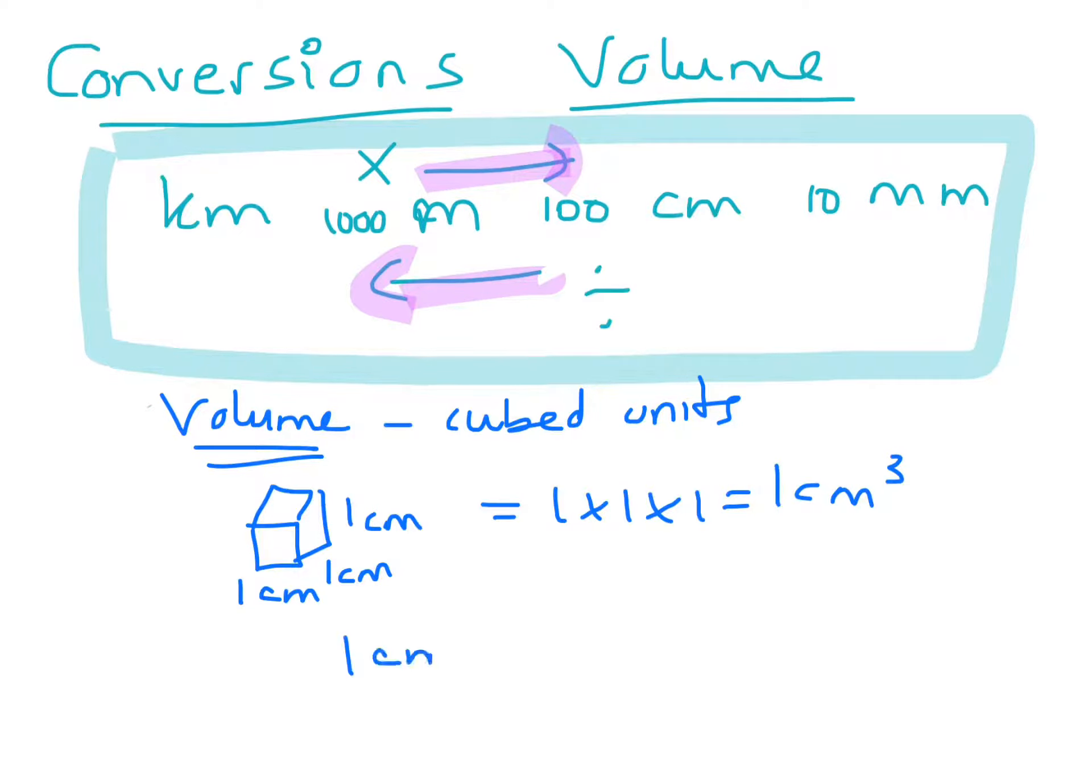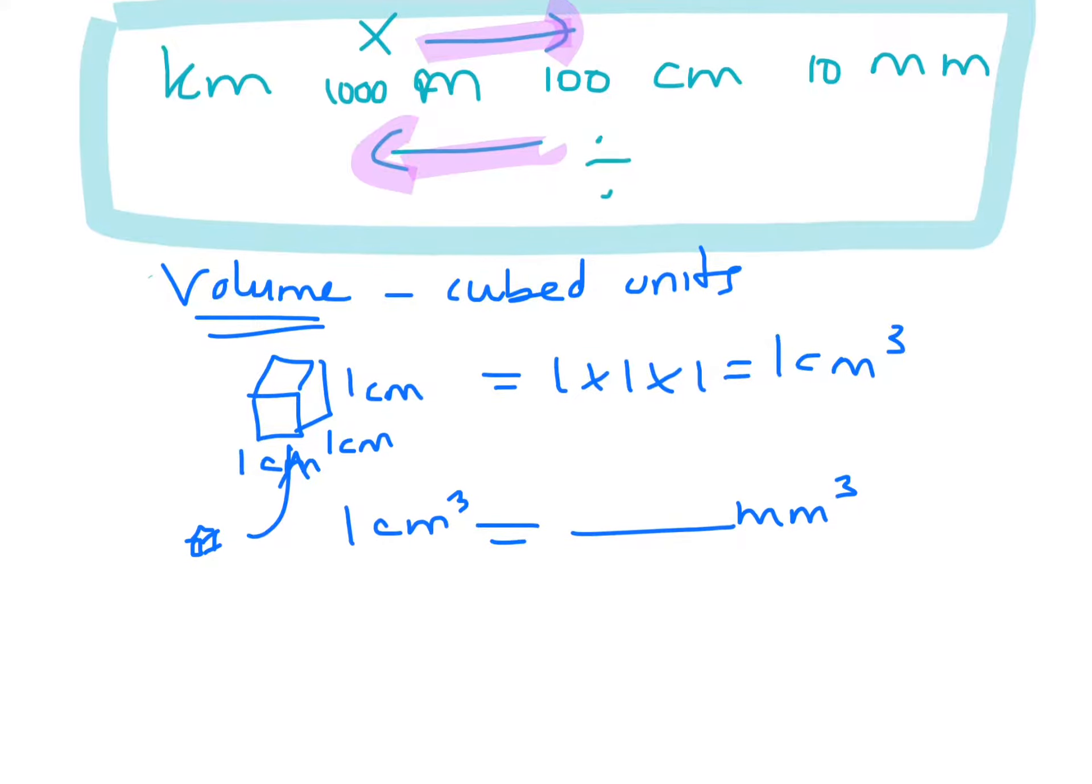Now, if I wanted to work out how many millimeters cubed are in 1cm cubed, think about a millimeter cube - it's just like that big. How many of those fit inside there? Then if you look at your cube and instead of having the sides in centimeters, let's change the centimeters to millimeters. So that's 10mm by 10mm by 10mm.